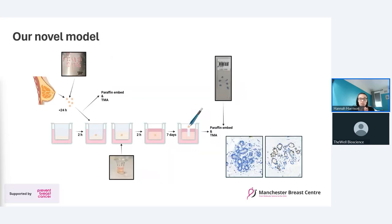With all of that in mind, we began developing our model. In brief: we take risk-reduction mammoplasties from ladies who come into the Christie or Wythenshawe hospitals in Manchester, chop the breast tissue into small chunks, embed them in hydrogel, culture them over time with drugs or hormones, then fix them, paraffin-embed them, and perform immunohistochemistry to detect changes within the cells. The first thing we wanted to optimize was the medium.